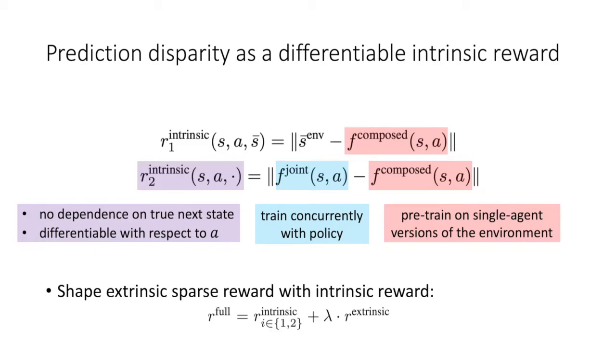Next, we simply shape the sparse extrinsic reward from the environment by adding on the intrinsic reward, scaled appropriately.